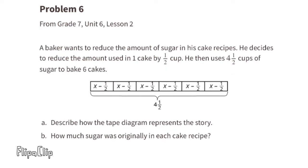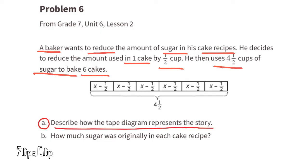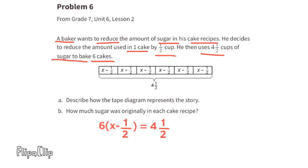Problem number six from 7th grade Unit 6 Lesson 2. A baker wants to reduce the amount of sugar in his cake recipes. He decides to reduce the amount used in one cake by one half cup, and then uses four and a half cups of sugar to bake six cakes. The tape diagram shows six boxes each containing x minus one half, with a total of four and a half. The x represents each cake's original sugar amount, the minus one half represents removing half a cup, and four and a half is the total sugar for all six cakes.